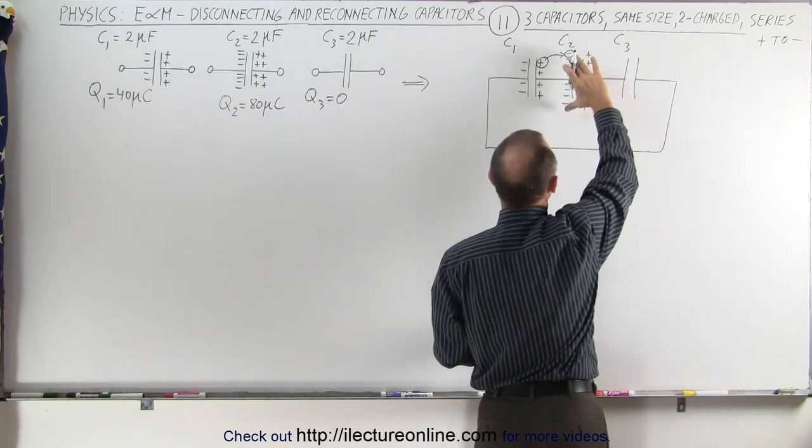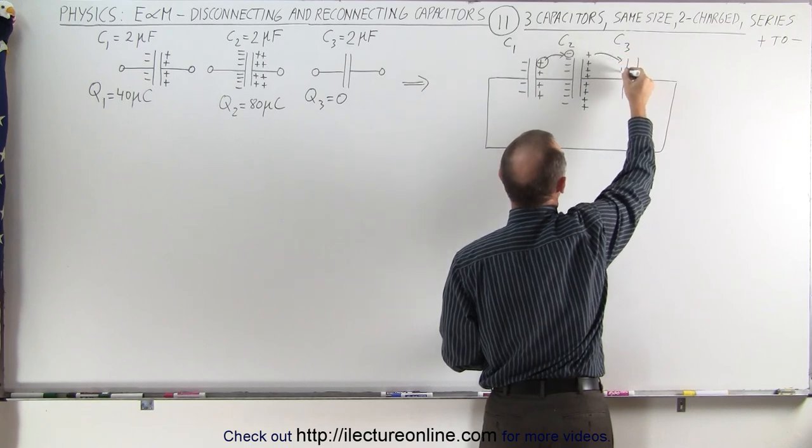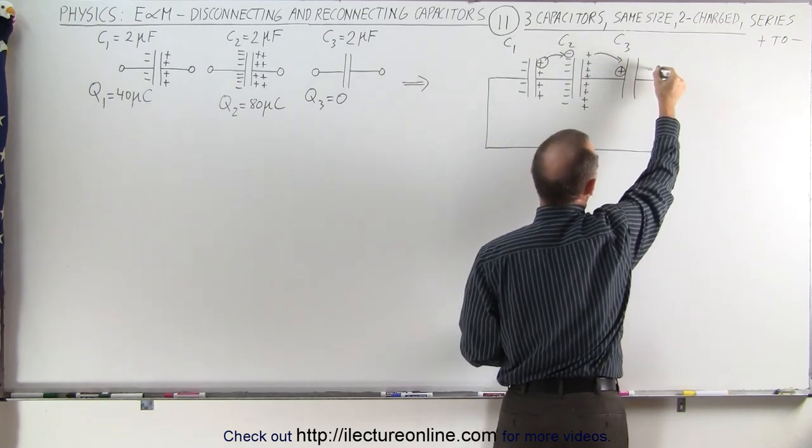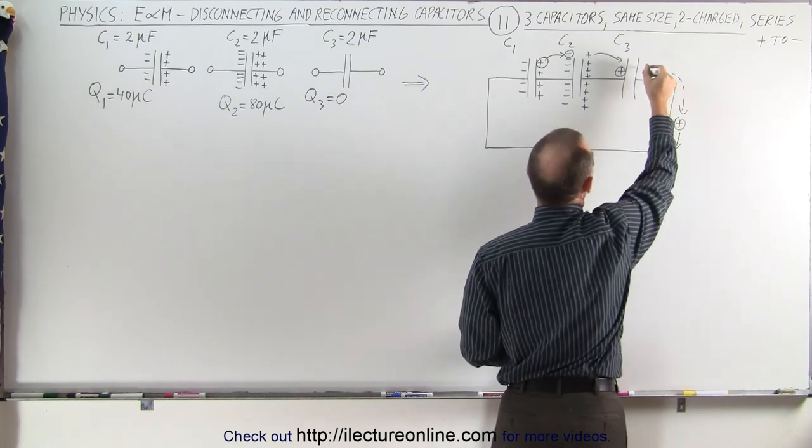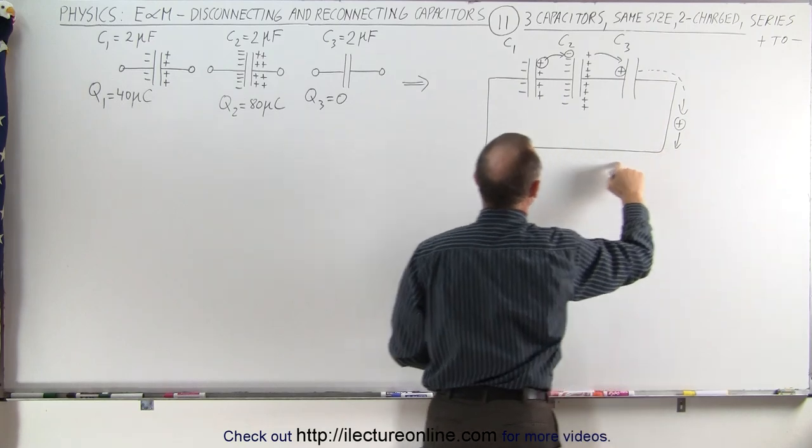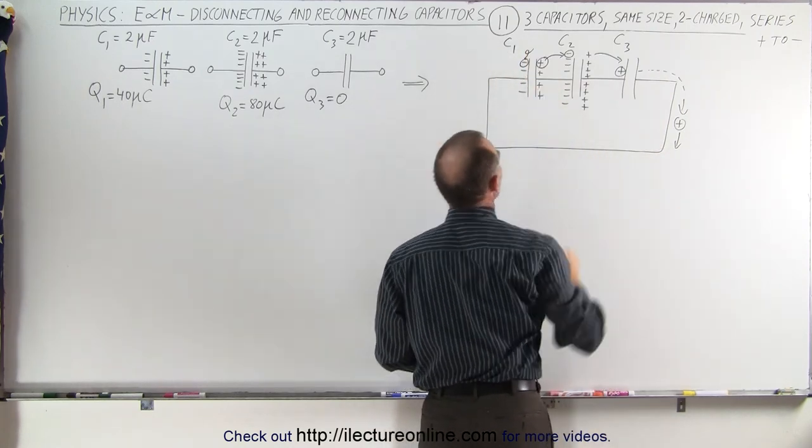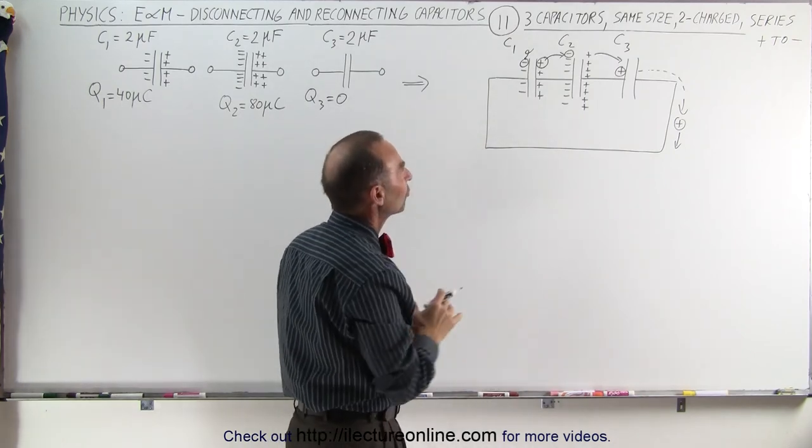That means there's one less negative charge there. One of these positive charges is going to be repelled over here, which means that one of these positive charges is going to be repelled, moving in this direction, and that means this side will become negative. This positive charge will come around over here and negate one of these negative charges. And this process will continue until everything gets to steady state.